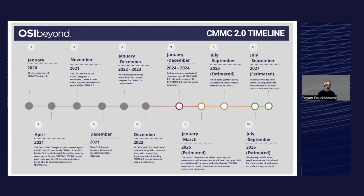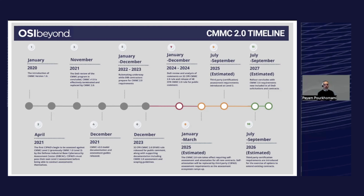In terms of the timeline, we're currently on step seven of the graphic on screen. Over the next year, the DOD will be finalizing the CMMC 2.0 proposed final rule. The estimated launch is Q1 of 2025, when the rule is expected to be included in new contracts. For the initial six months, there will only be a requirement for self-assessment and attestations by contractors. By Q3 of 2025, they will add the third-party assessment requirement for Level 2 certifications. By Q3 of 2026, third-party assessments will be added for optional and extension periods. And by Q3 of 2027, the full rollout will be included in all DOD solicitations and contracts.